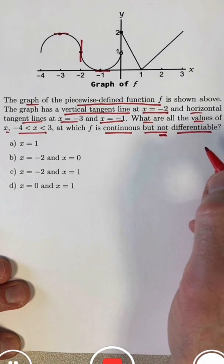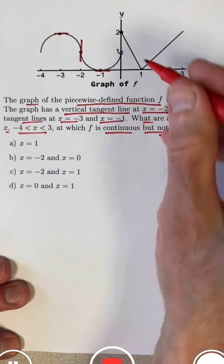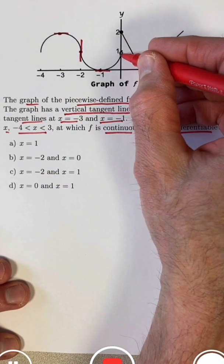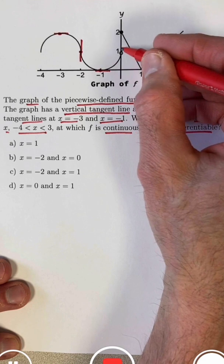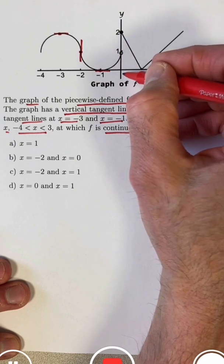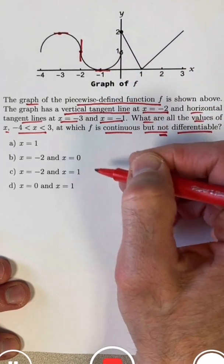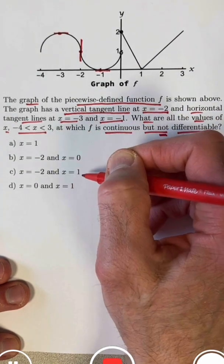Continuity means you can draw the graph without picking up your writing utensil. The one place where you have to pick up your writing utensil is right here. You have a jump discontinuity from a y value close to 1 to a y value of 2 at x equals 0. So x equals 0 cannot be one of the answers. The answer either has to be choice A or choice C.